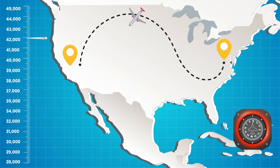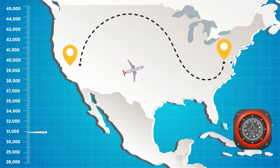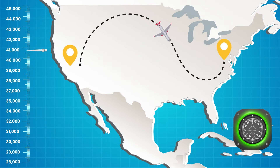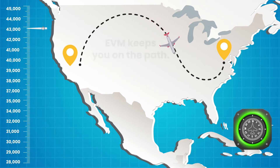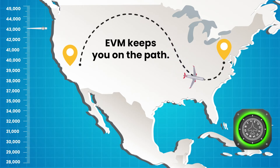If she were to get off that flight plan, the aircraft instrumentation will alert her. Then she can take corrective actions. For a project, EVM is that instrumentation. It is only if you know that you veered from the plan that you can try to figure out how to get back on it.